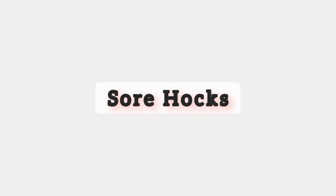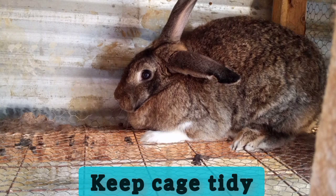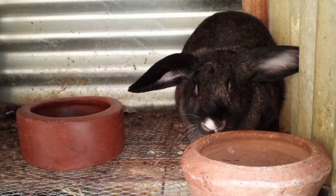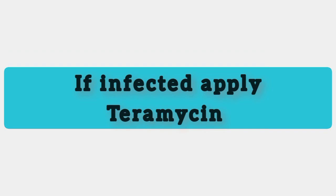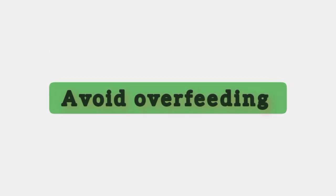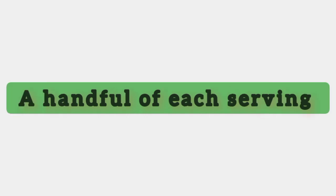Disease seven: sore hocks. Prevention is by keeping the cage tidy and devoid of sharp objects that can pierce the hocks of the rabbit. If the rabbit is infected, apply terramycin spray on the affected hocks. Disease eight: red urine. Treatment and prevention: avoid overfeeding the rabbit — just use the rationing of a handful of each serving, whether it is greens or pellets.